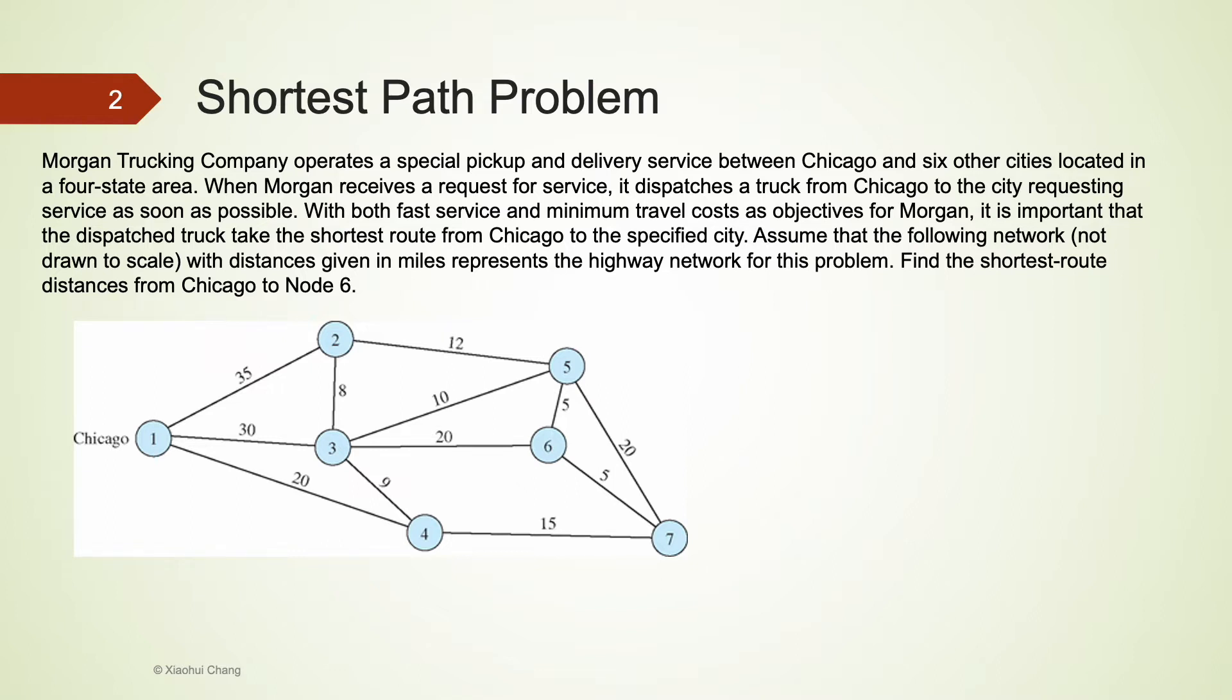A first look at this problem, especially the graph, appears to be quite daunting. This does not appear to be a standard linear programming problem we have worked on earlier. The trucking company is interested in finding an optimal path that allows the company to dispatch a truck from Chicago to node 6 as quickly as possible. This path is also known as the shortest path.